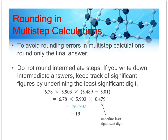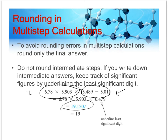For multi-step calculations, don't do any rounding or counting of sig figs until you get to the very end, because rounding early will artificially truncate your answer. For example, if you subtract first and then multiply, do the subtraction, carry out the multiplication, and then round only at the very end.